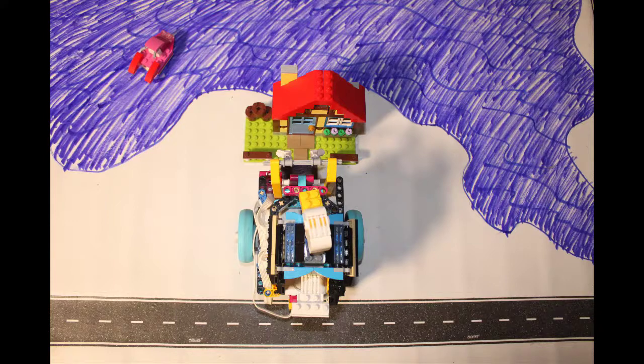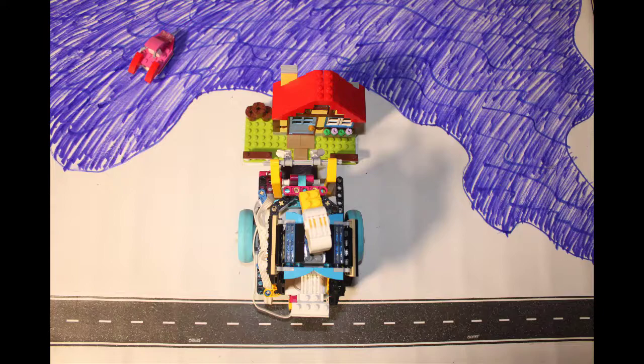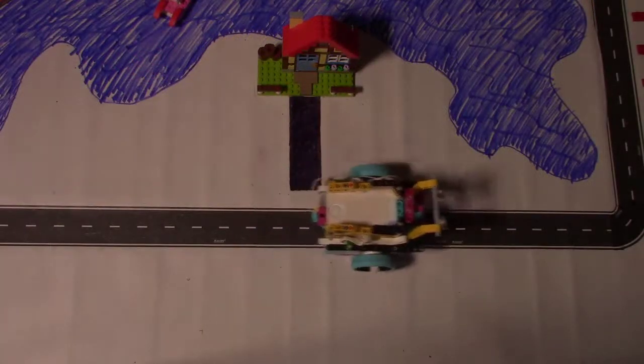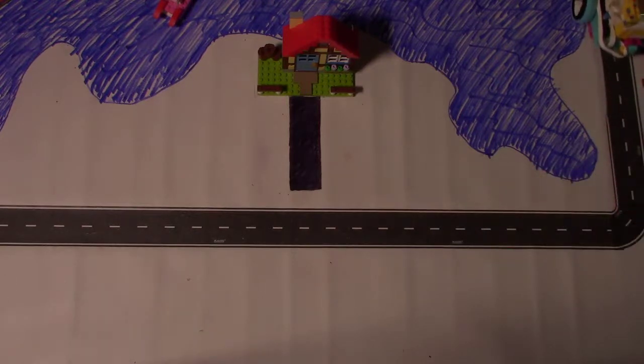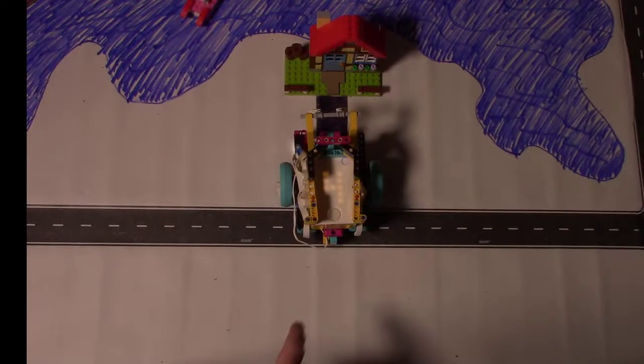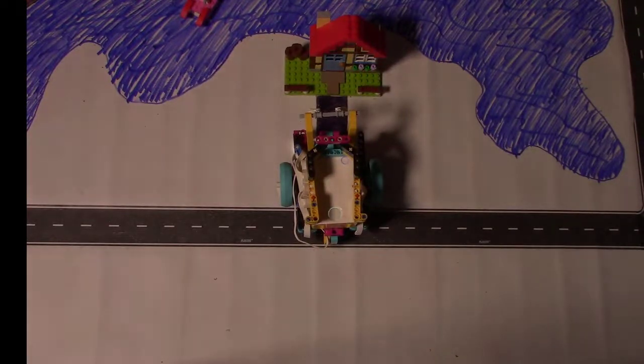One of the problems with the program we created in episode 4 is it depends on exactly where Chariot starts. Let's take a closer look. Here's what happens when Chariot starts right in front of the house. Here's what happens when it starts halfway between the road and the house.